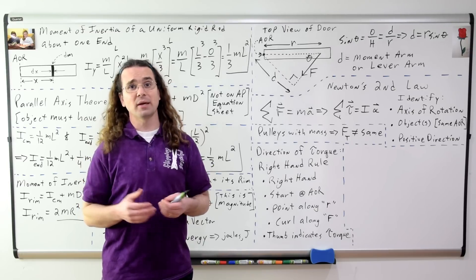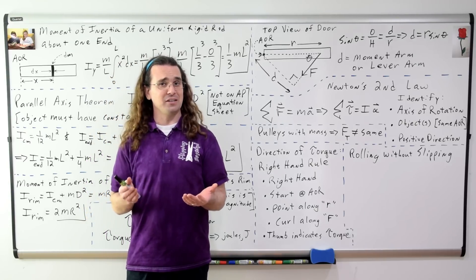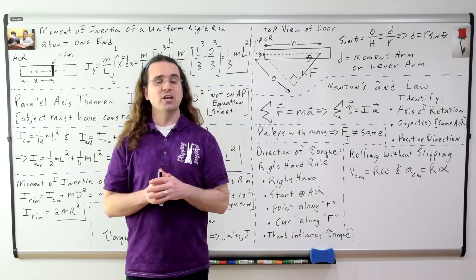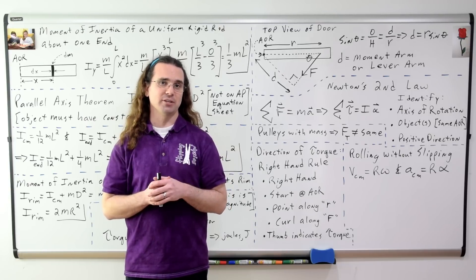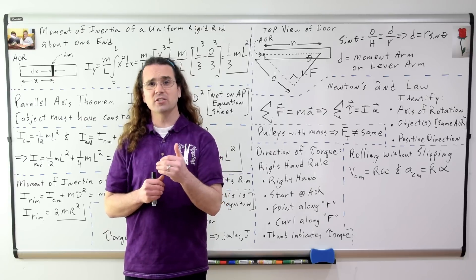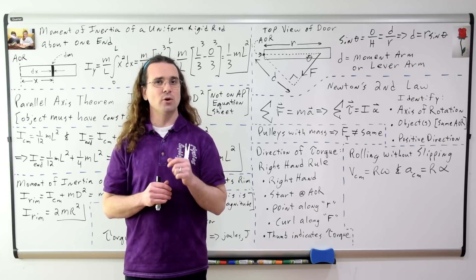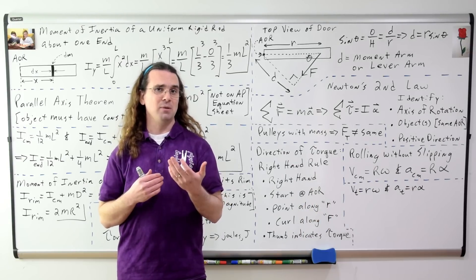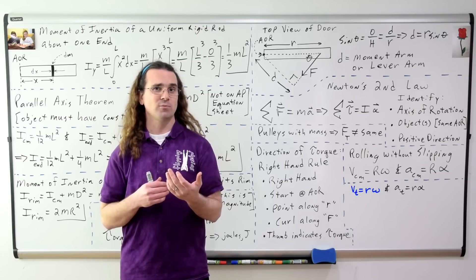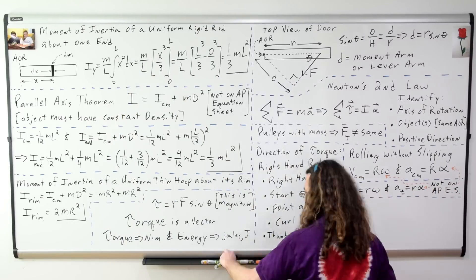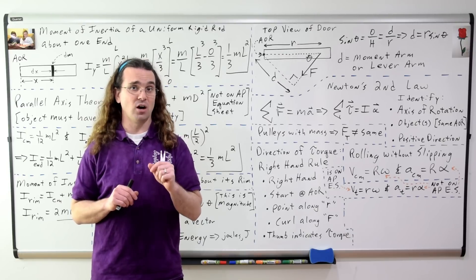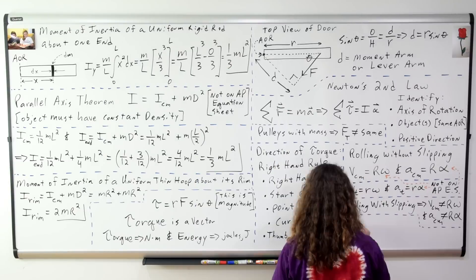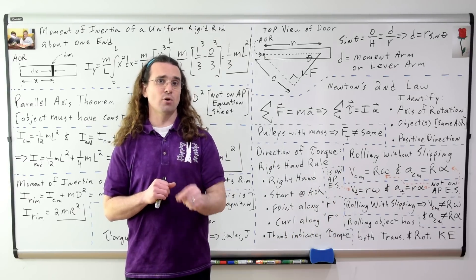Now let's talk about rolling without slipping — when an object rolls along a surface without slipping. The equations which describe rolling without slipping are: the velocity of the center of mass equals the radius times the angular velocity, and the acceleration of the center of mass equals the radius times the angular acceleration. Notice how similar these are to the tangential equations. The only one of these four equations on the AP equation sheet is tangential velocity equals radius times angular velocity — you must memorize the other three. The equations for rolling with slipping are simply that these two rolling-without-slipping equations are not true. Remember that when an object is rolling, it has both translational and rotational kinetic energy.